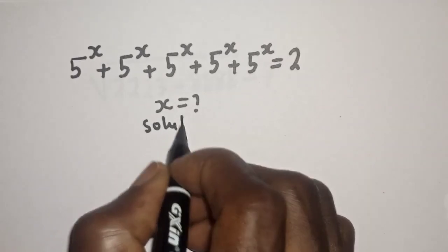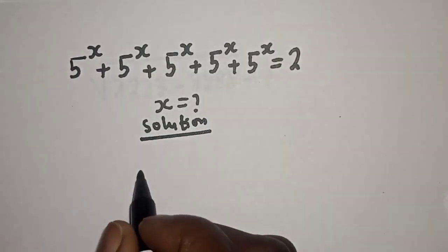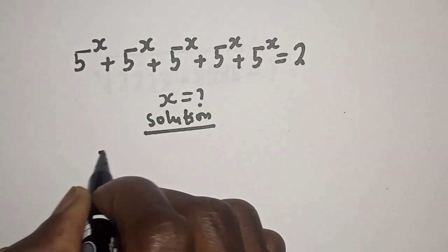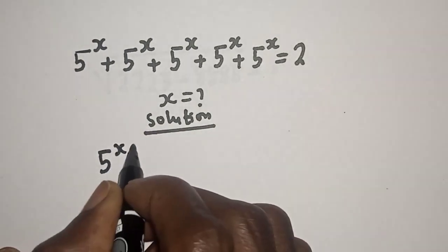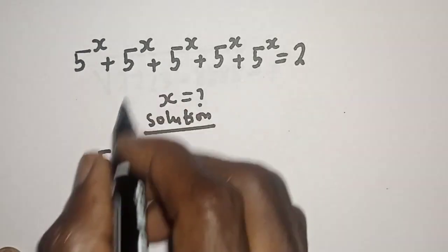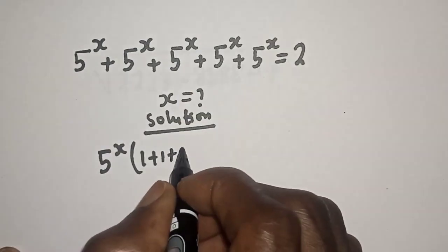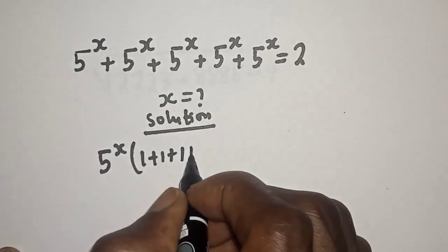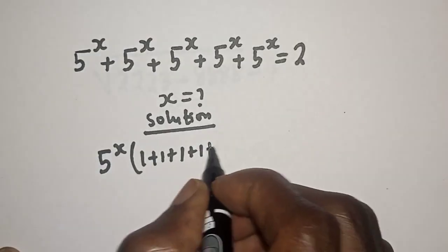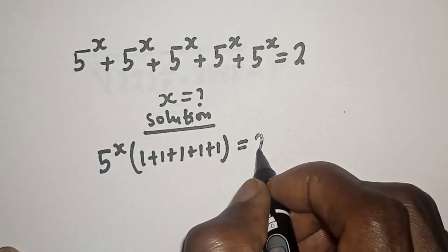Solution. Here we have 5 raised to power s, which is very common. Let's bring it out. Each of the five terms divided by 5^s gives 1, so we get 5^s times (1 + 1 + 1 + 1 + 1) is equal to 2.